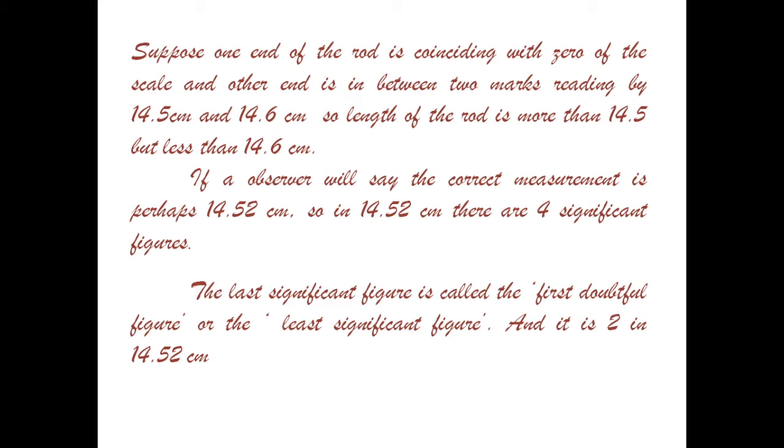So we randomly write 2 or 3 or 4. So these 2, 3, 4 are called least significant figures.